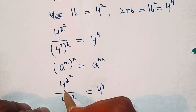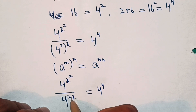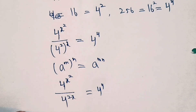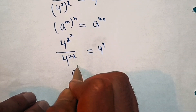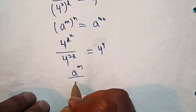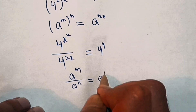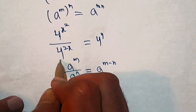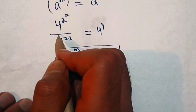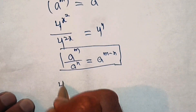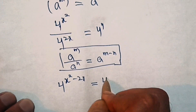Now here the base is 4 and the exponent is x square, and here the base is 4 and the exponent is 2x. So we have the same base. We apply the formula a power m over a power n equal to a power m minus n. So this equation will become 4 power x square minus 2x equal to 4 power 4.